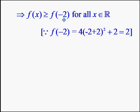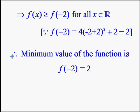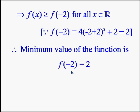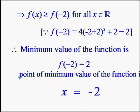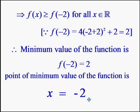So what do we conclude? Therefore f(x) ≥ f(-2) for all values of x. That means there is no value of x for which f(x) becomes less than f(-2). That is, the minimum value of the function is f(-2), which is equal to 2. The point at which the function attains the minimum value is x = -2.